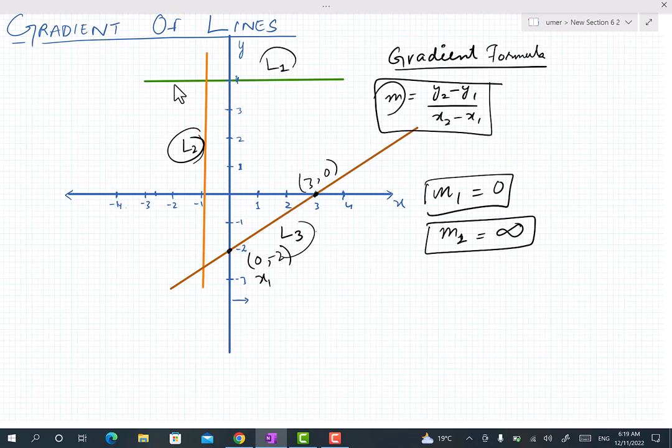consider point one's coordinates as x1 and y1 and point two's coordinates as x2 and y2, and now simply put the values in the formula. Like y2 minus y1, so y2 is zero and y1 is minus two.